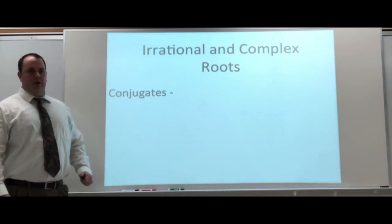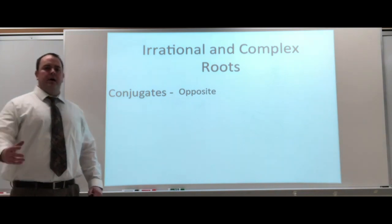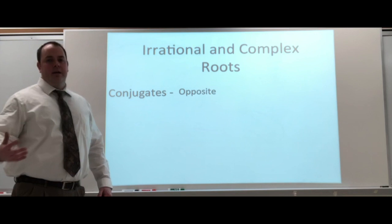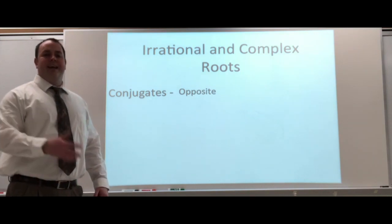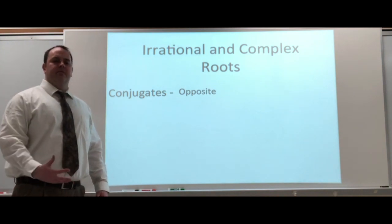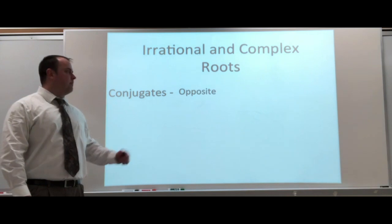Now, conjugates are not going to be a big deal. Conjugates, pretty much a fancy word for opposite. The conjugate of 5 is negative 5. Conjugate of square root of 10 would be negative square root of 10. So, just taking the opposite value is considered the conjugate or what we need to deal with here.